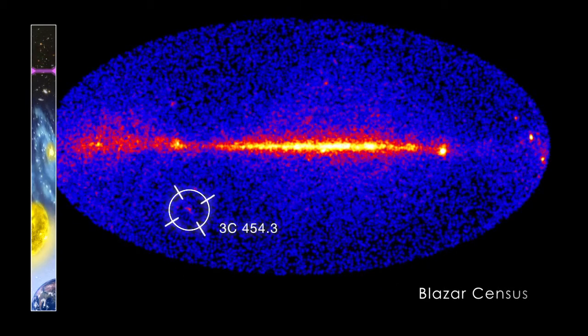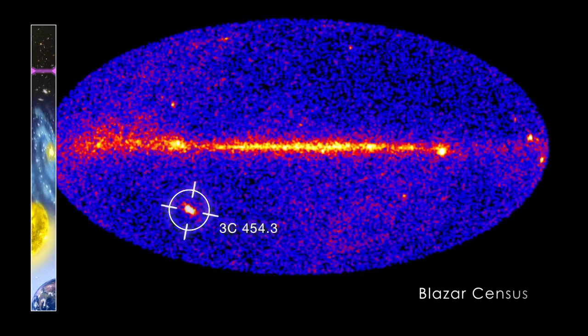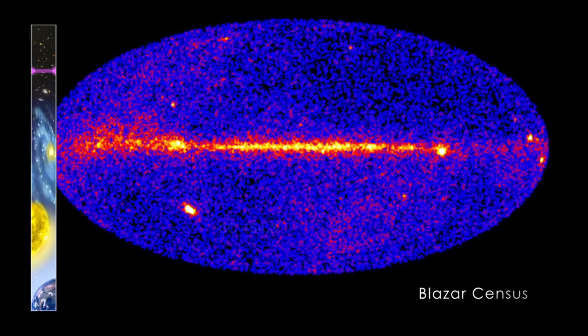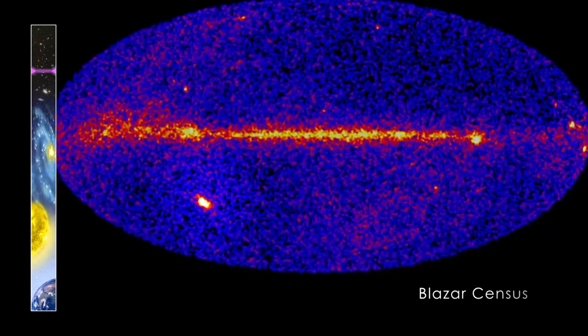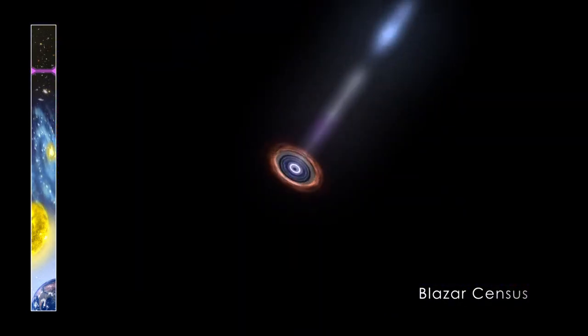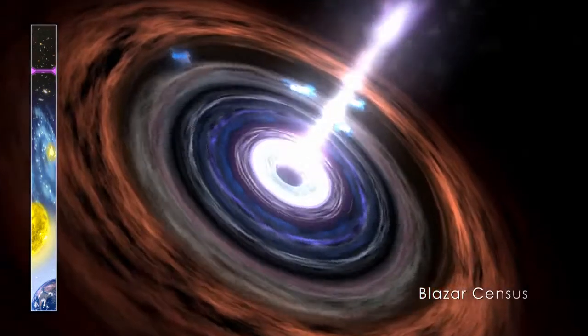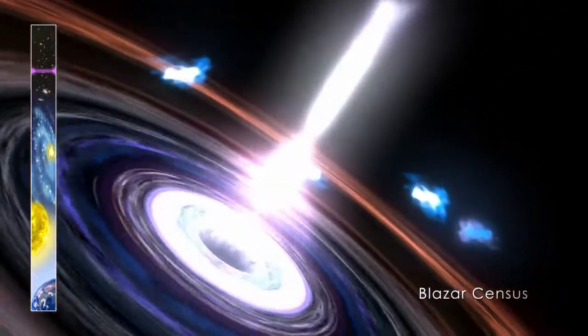Every three hours, the large area telescope onboard Fermi builds up a picture of the sky in gamma rays. One thing it sees a lot of is blazars, active galaxies whose emissions are powered by supermassive black holes. Because we're watching them all the time, we can track their activity and alert other telescopes to new flare-ups.